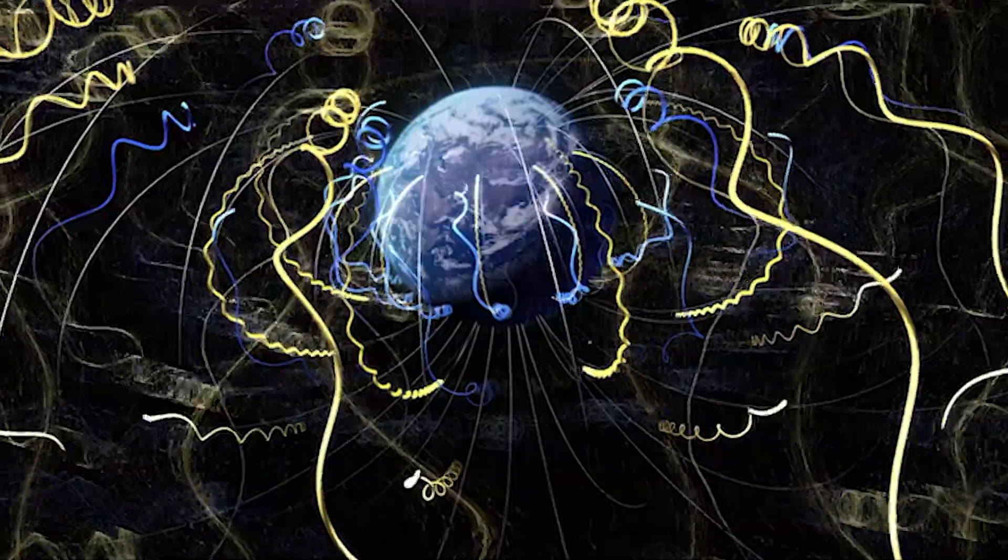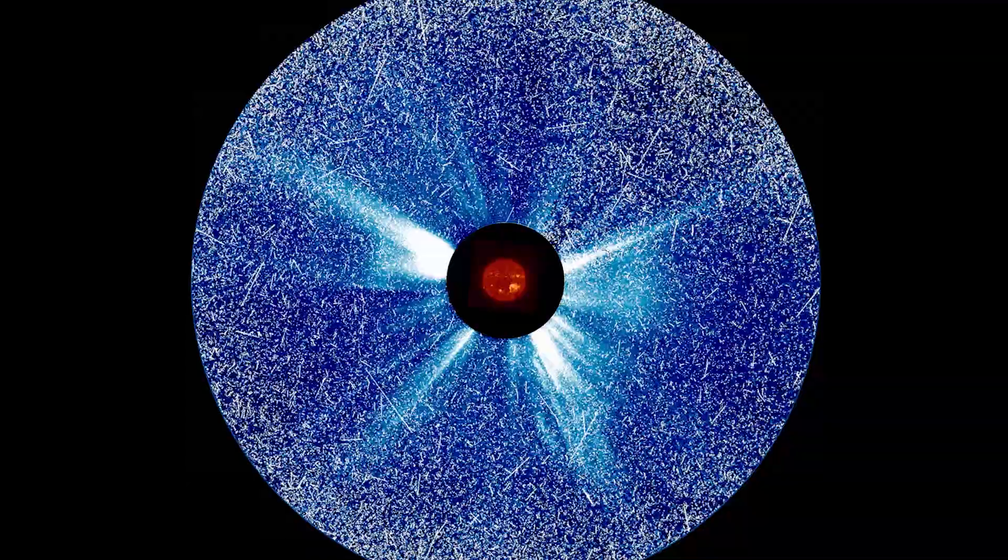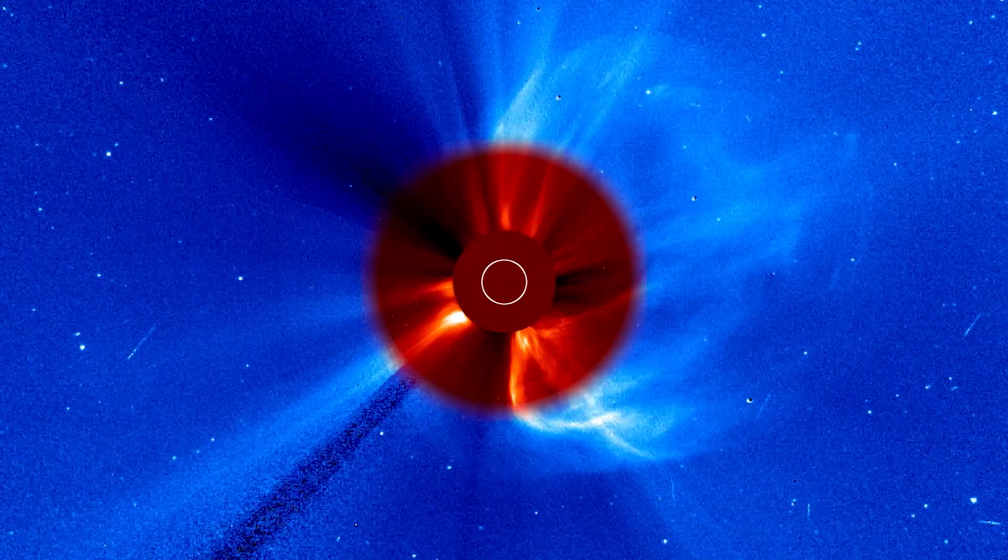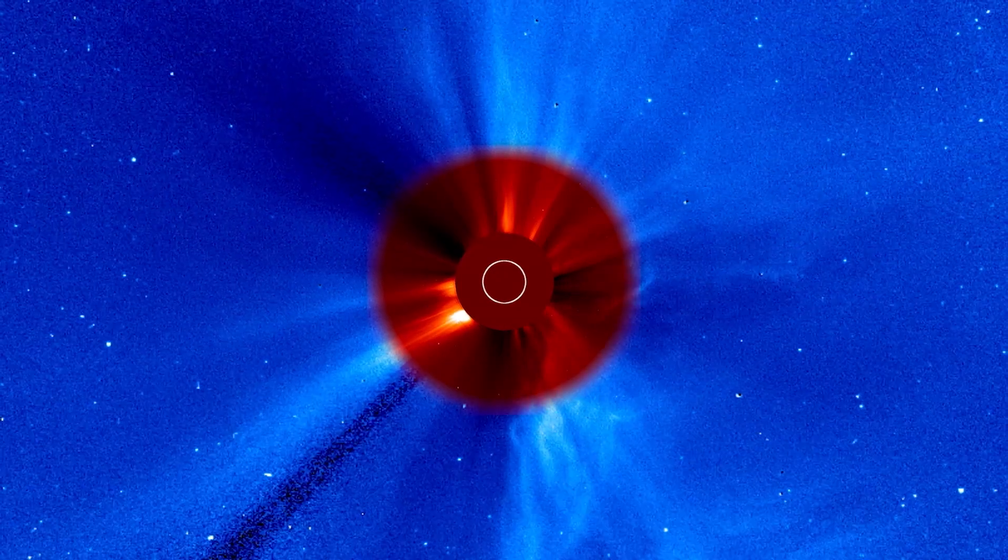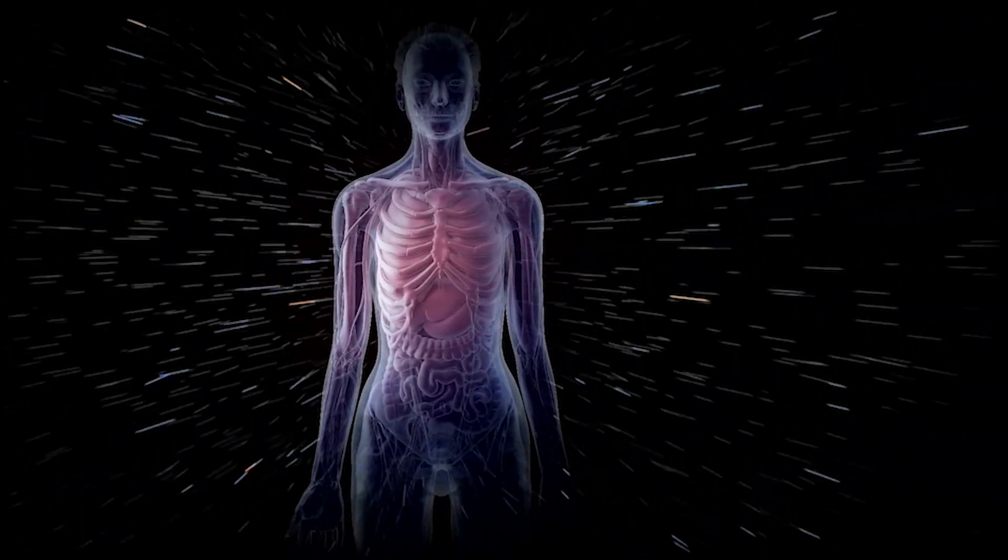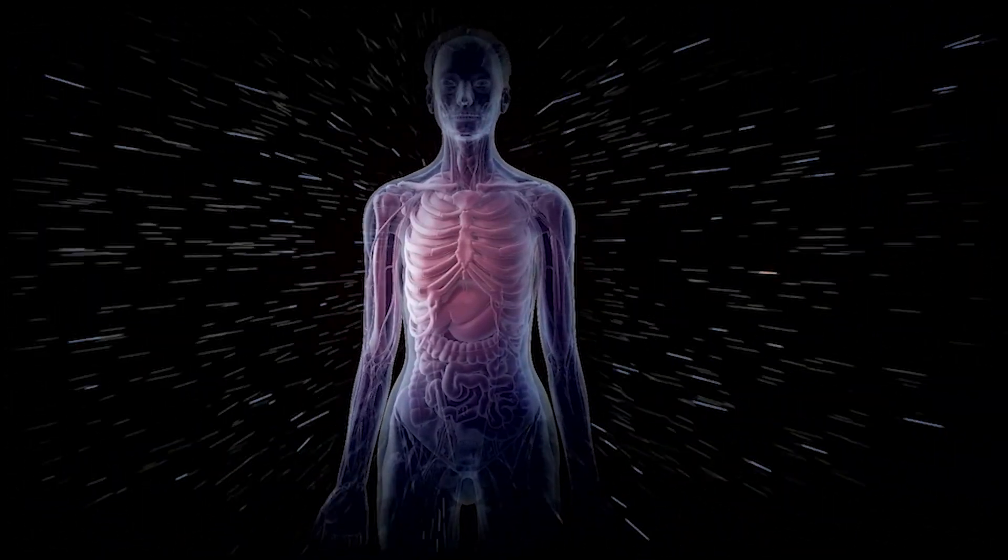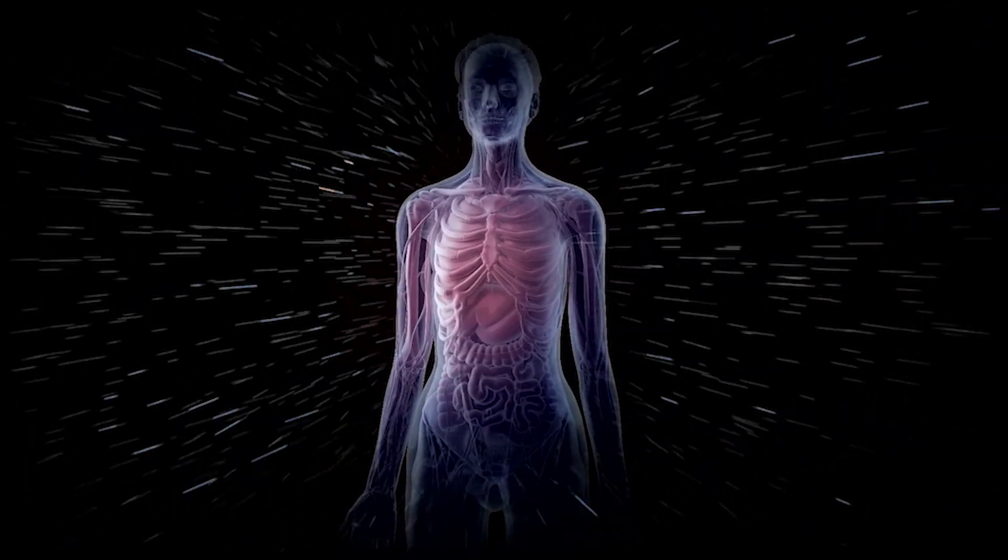When astronauts travel in space, they can't see or even feel radiation. However, NASA scientists are studying the effects radiation plays on the human body and developing ways to monitor and protect against this silent hazard.